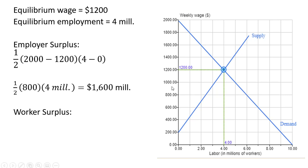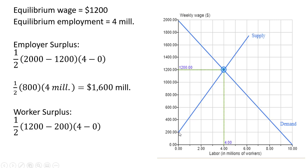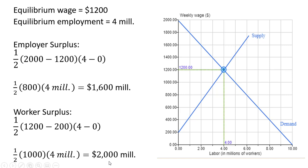As for worker surplus, it's going to be another triangle — the area between the wage and the height of the supply curve up to the last worker. So one-half times ($1,200 minus the vertical intercept of $200 for the supply curve) times the base of 4. Simplifying, we get $2,000 million, or $2 billion of worker surplus. Okay, that's it.